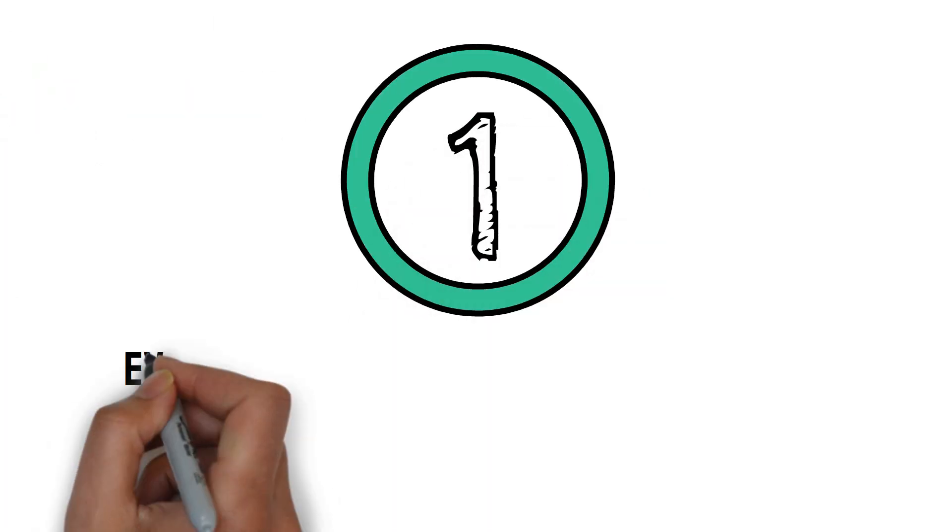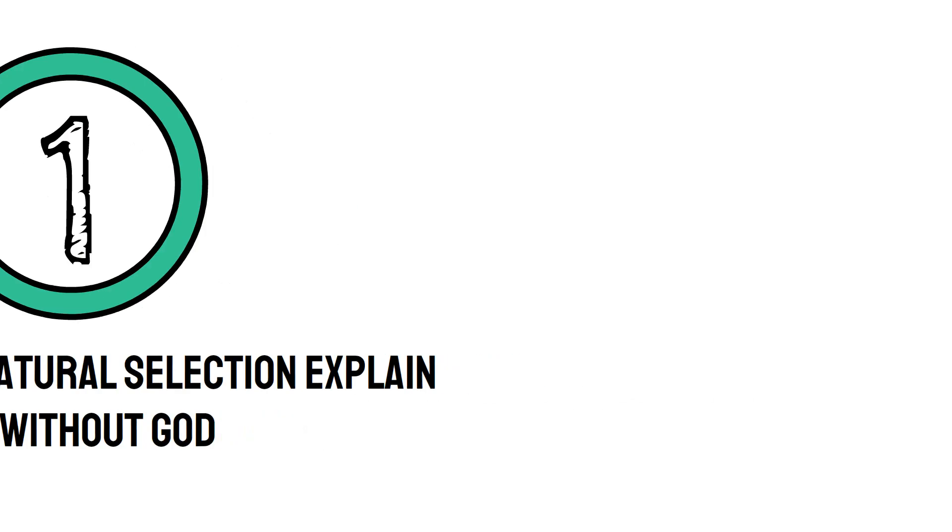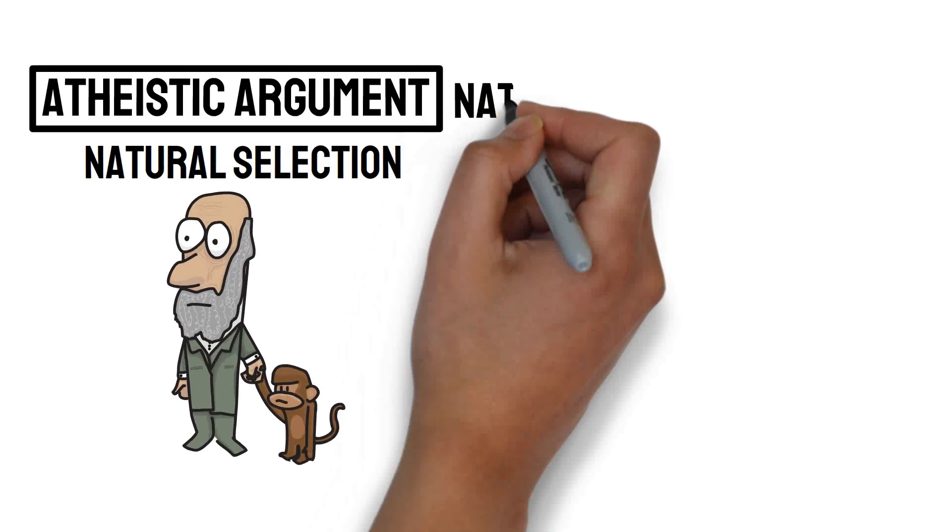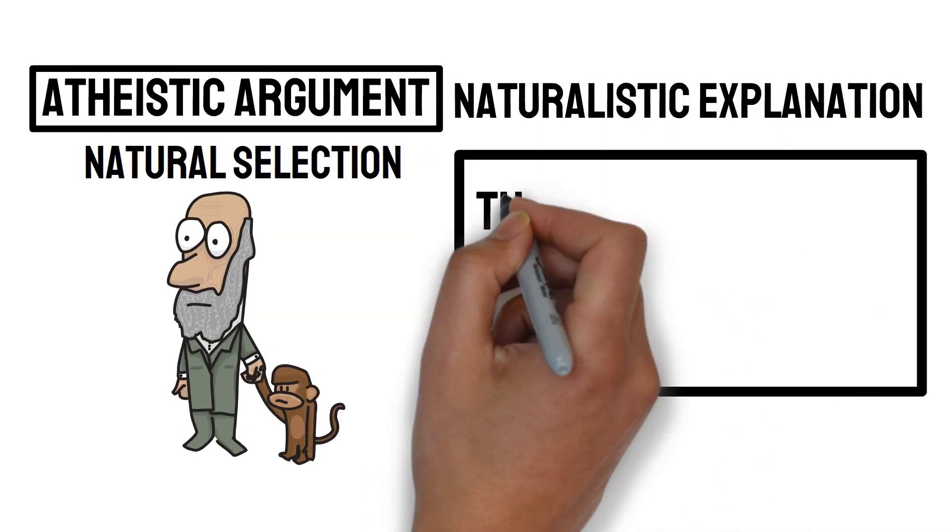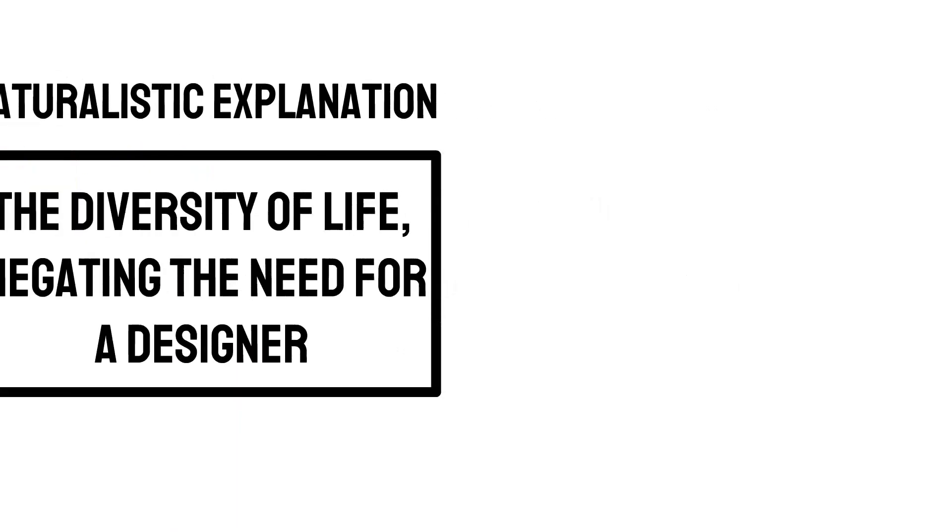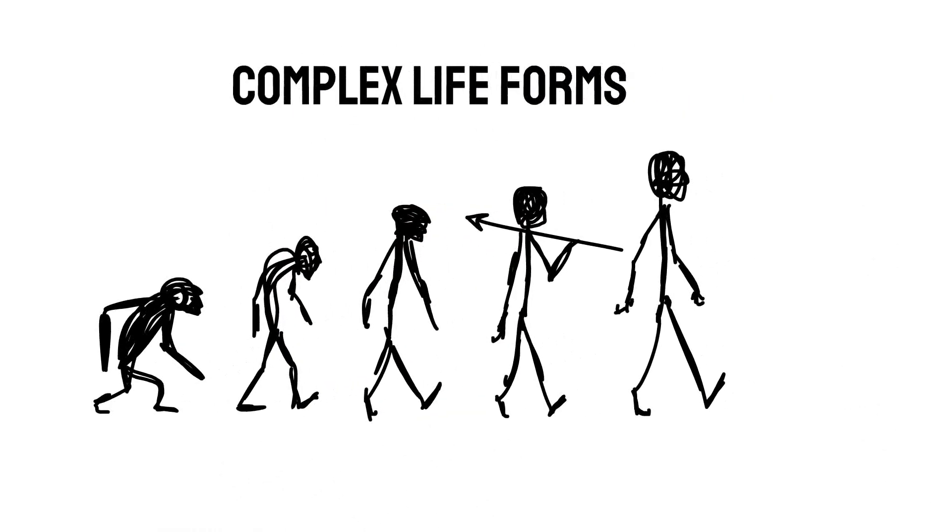Number one, evolution and natural selection explain life without God. The argument is that evolution through natural selection provides a fully naturalistic explanation for the diversity of life, negating the need for a designer. Random mutations and survival of the fittest can lead to complex life forms without divine intervention.